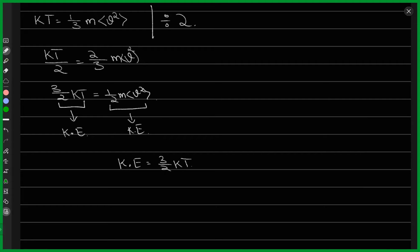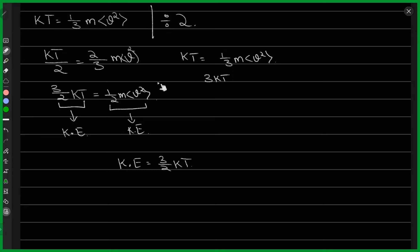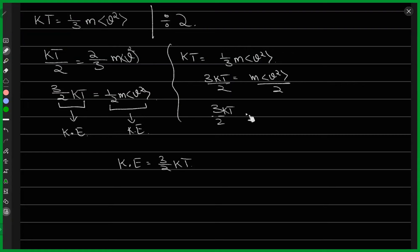A student asked how (1/3) became (1/2). Starting from kT = (1/3) m⟨v²⟩, take the 3 to the left: 3kT = m⟨v²⟩. Now divide both sides by 2: (3/2)kT = (1/2) m⟨v²⟩. I did it directly before which caused confusion, but that's the step-by-step derivation.